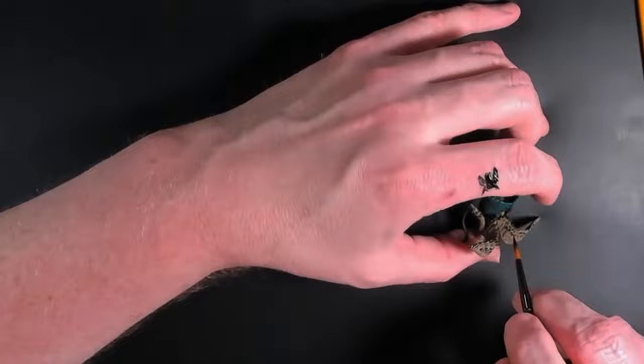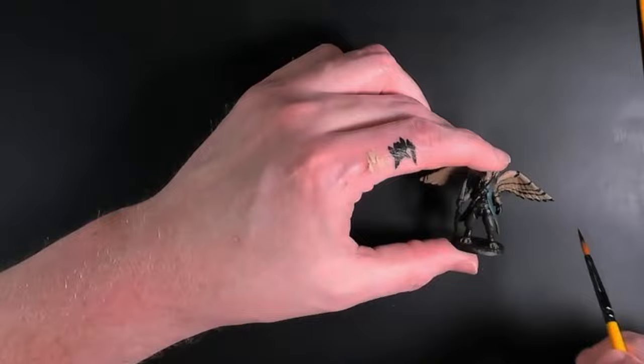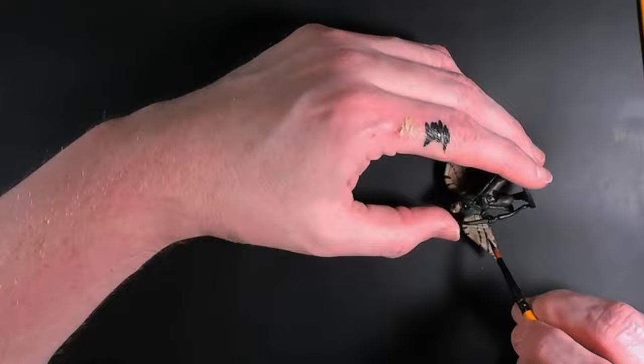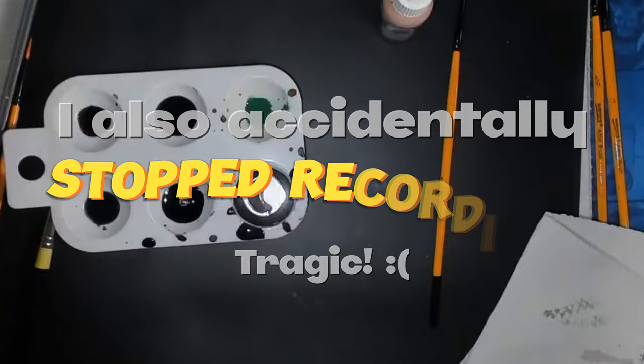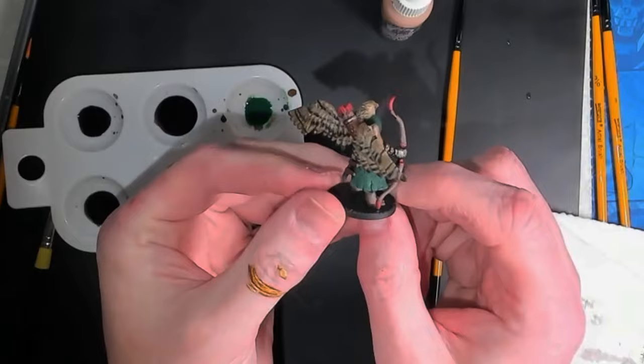Since I didn't think about making this channel until after I started the challenge, the first two monsters have some paint on them already. The Aarakocra is about half painted due to my daughter Evelyn and the Aboleth is completely painted as a proof of concept. My daughter may help me on some monsters since she enjoys painting and it's good family time.